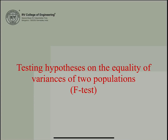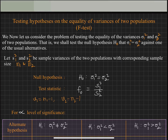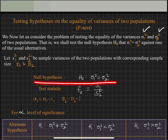In this video lecture, we shall discuss testing the hypothesis on the equality of variance of two populations. We have two populations with variances Sigma one square and Sigma two square, and we want to test the null hypothesis that the population variances of the two populations are equal. We consider samples of size n1 and n2 from the first and second populations, with sample variances s1 square and s2 square. The null hypothesis is H naught: Sigma one square equals Sigma two square.